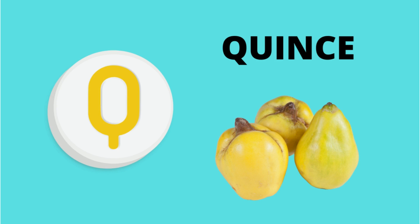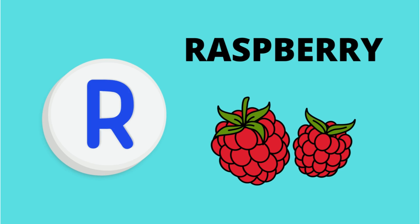Q. Q is for Queens. R. R is for Raspberry.